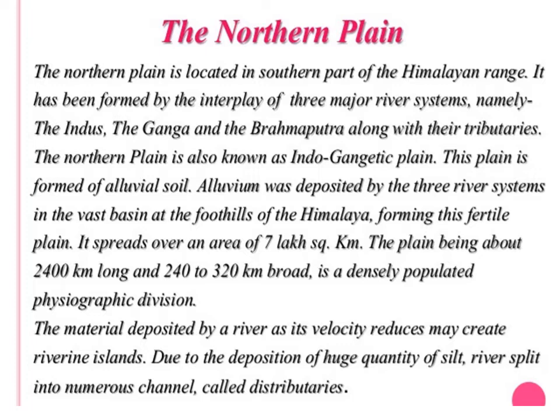The total area of the North Plain of India is about 7 lakh square kilometers. The plain is about 2400 kilometers long and 240 to 320 kilometers broad. The material deposited in the North Plain is alluvium or alluvial soil. Different landforms are made by the river, including riverine islands and distributaries.